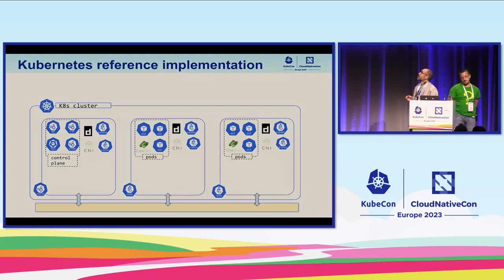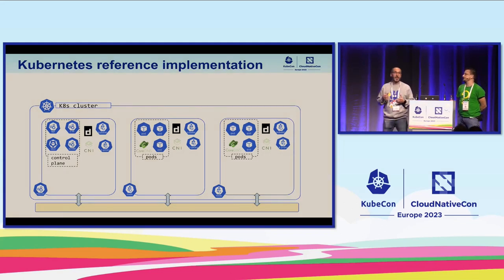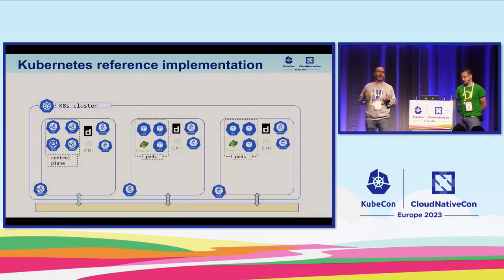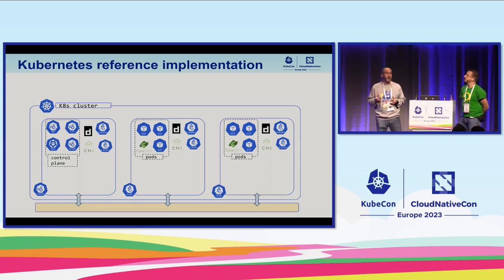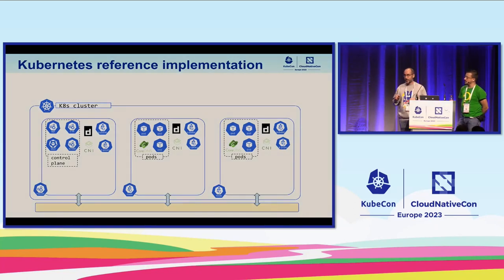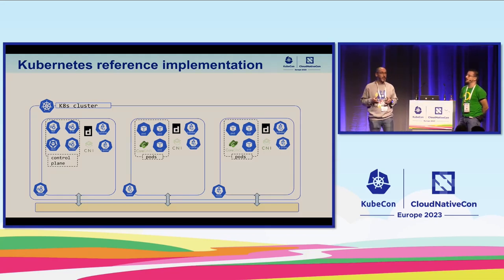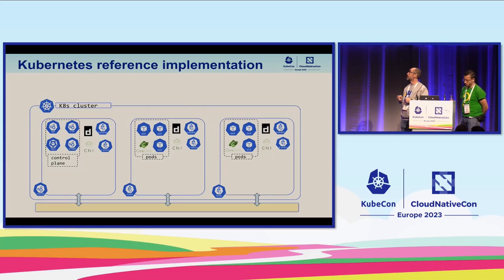In a Kubernetes cluster you have both a reference architecture and a reference implementation. And this is the first myth: you don't have to use kube-proxy. Kubernetes defines a service API, and kube-proxy is just one implementation. You don't have to use iptables — you can use eBPF or other technologies. Kubernetes defines APIs and behaviors, and ensures compliance through end-to-end tests and a conformance project.